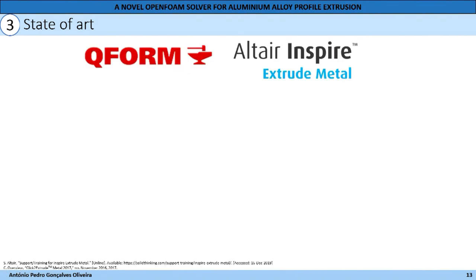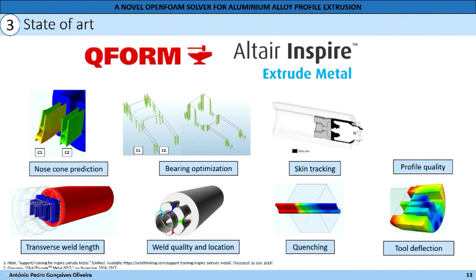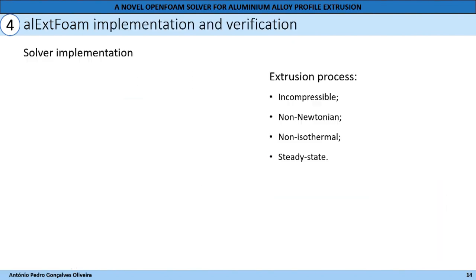There are some commercial extrusion process softwares available in the industry, such as Keyform or Altair Inspire Extrude Metal, that perform this type of study. They have also included some features that can be used to improve the extrusion process, like nose comb prediction, transverse weld length, weld quality, skin tracking, and much more.